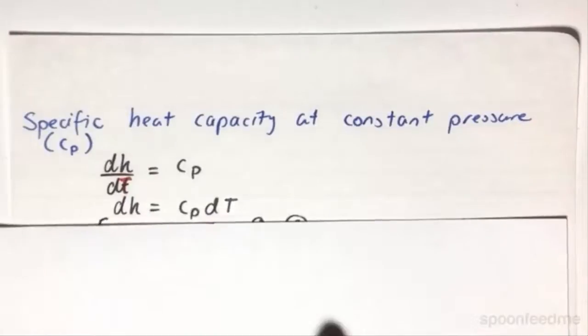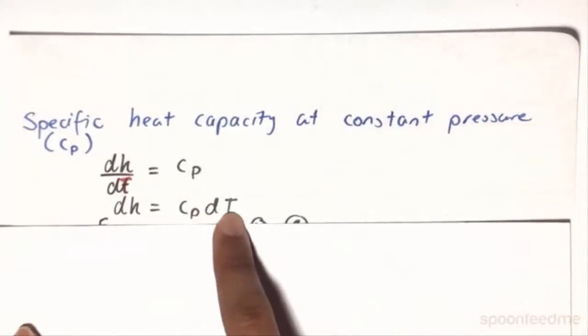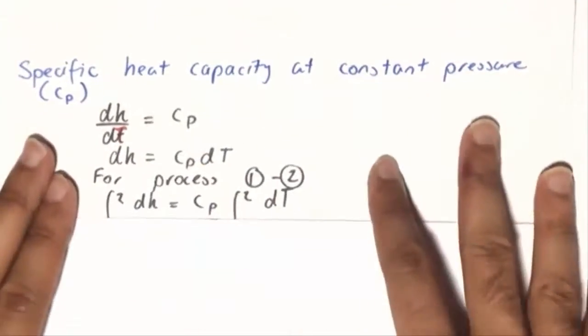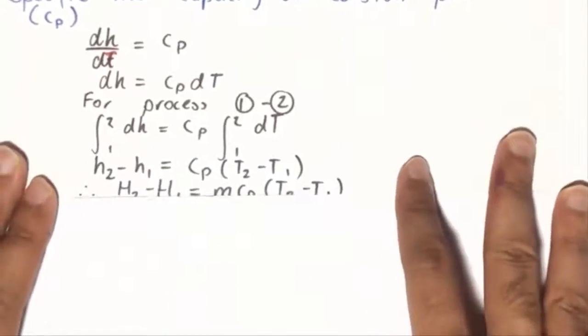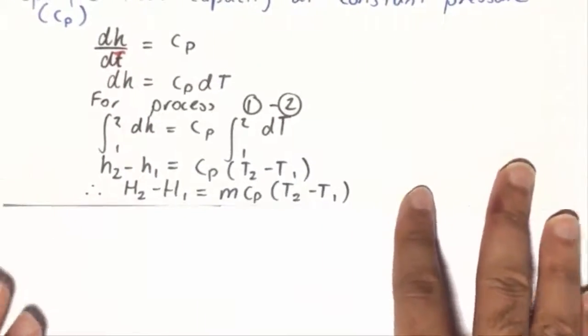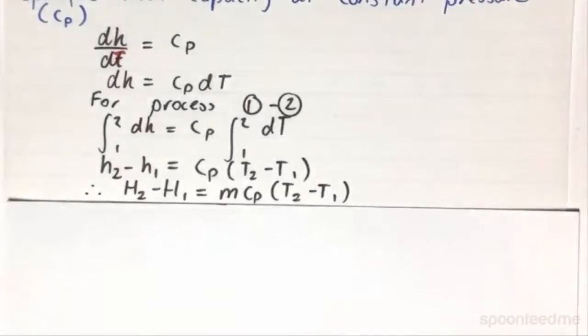And so therefore, dH equals Cp dT. And in a similar fashion as we did for U2 minus U1, we find that H2 minus H1 is equal to Cp times T2 minus T1. This is going to be crucial going forward in the course.